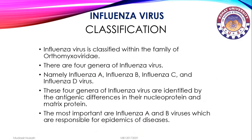Influenza virus is classified within the family Orthomyxoviridae. There are four genera of influenza virus: influenza A, influenza B, influenza C, and influenza D. These four genera are identified by the antigenic differences in their nucleoprotein and matrix protein. The most important are influenza A and B viruses, which are responsible for epidemics of disease.